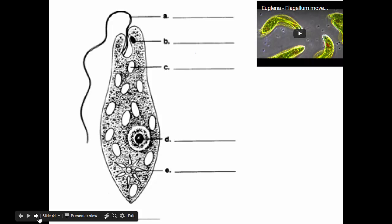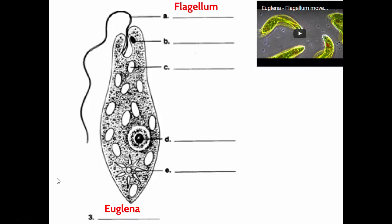Our last one is the euglena. When you see euglena alive, they're green. They're kind of shaped like a cucumber or pickle. What does a euglena use for its locomotion? A flagellum. There's a flexible part of the euglena that's sensitive to light.